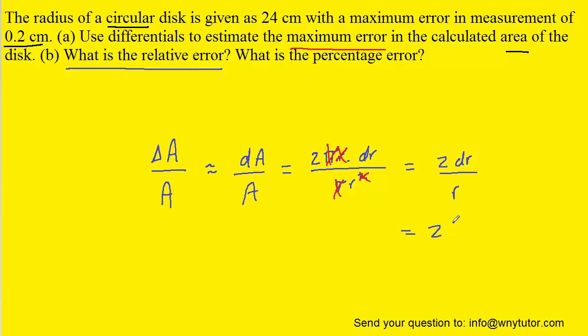So plugging in the known value for dr, which is 0.2 centimeters, divided by the radius, which was 24 centimeters, gives us a relative error of approximately 0.017. And in terms of a percent error, we would have approximately 1.7 percent, just moving the decimal point over two places to the right.